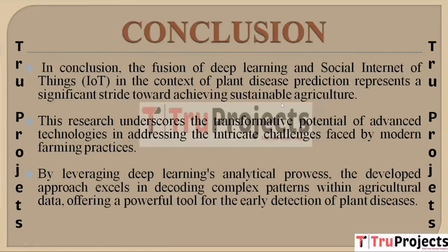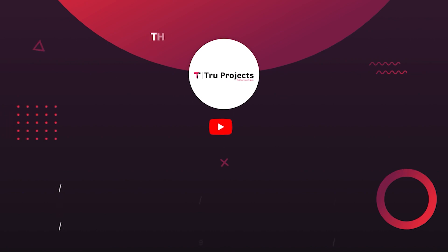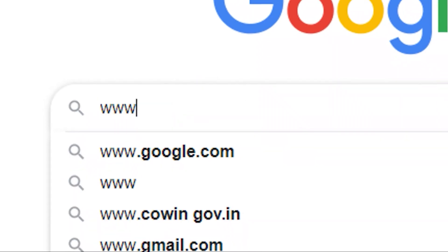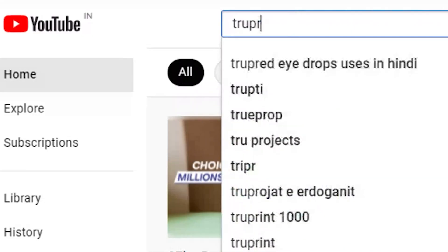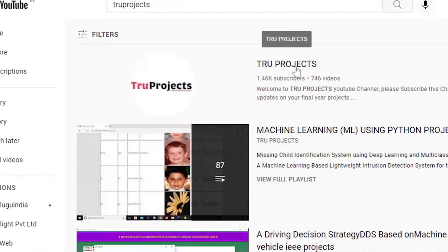In summary, the integration of deep learning and the Social Internet of Things for predicting plant diseases marks a noteworthy advancement in sustainable agriculture. This study emphasizes the transformative impact of cutting-edge technologies in overcoming the intricate challenges of contemporary farming. Through deep learning's analytical capabilities, the methodology excels in identifying intricate patterns for early plant disease detection. Thank you for watching. For more projects, please visit www.trueprojects.in and subscribe to the True Projects YouTube channel.